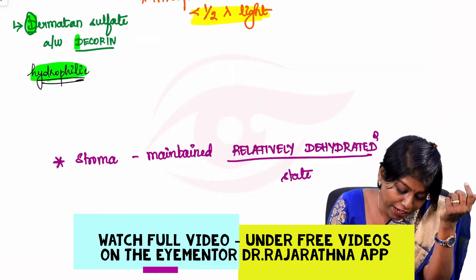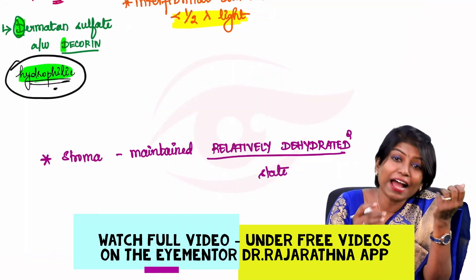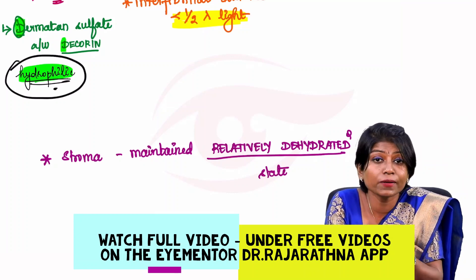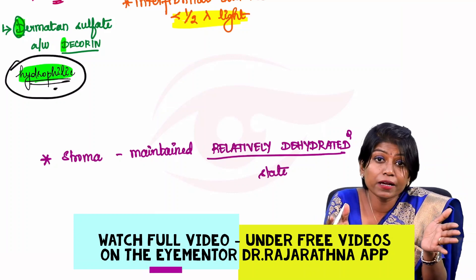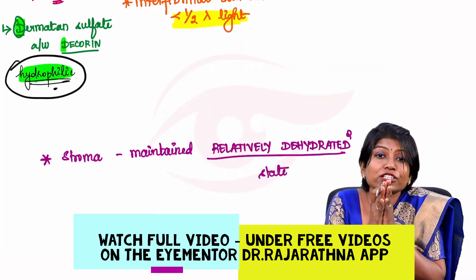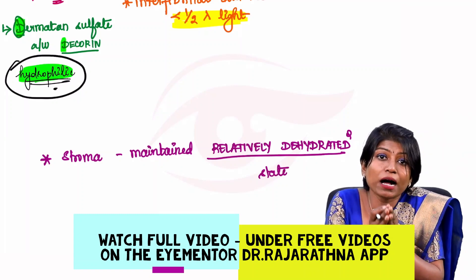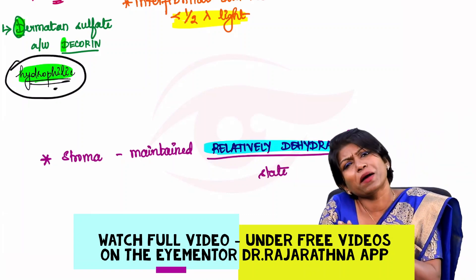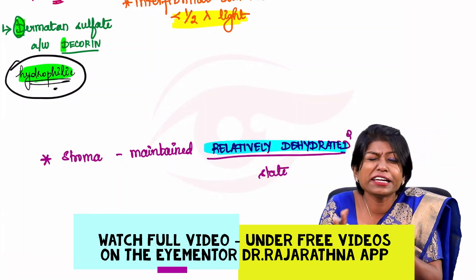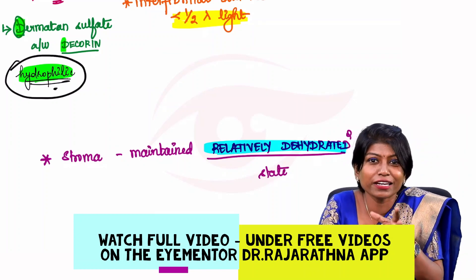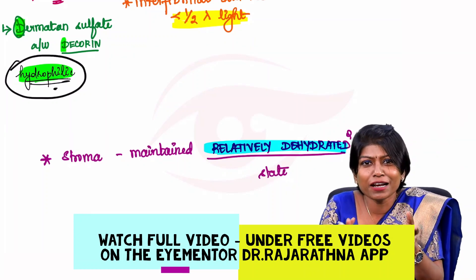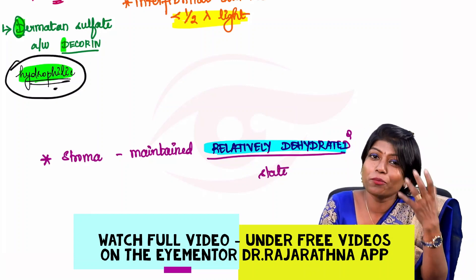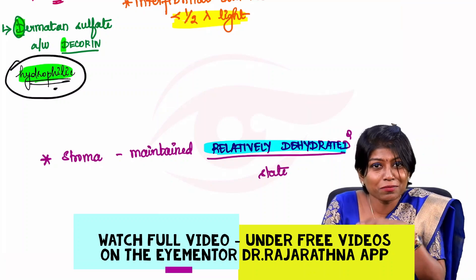The proteoglycans of the stroma are hydrophilic and tend to absorb water, but excess water disrupts the interfibrillar distance. Therefore, the stroma must be maintained in a relatively dehydrated state — not too much water, not too little — to preserve corneal transparency.